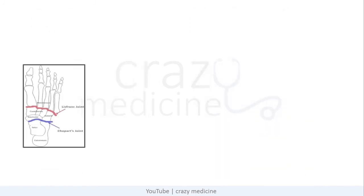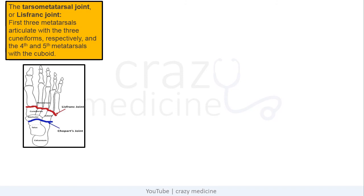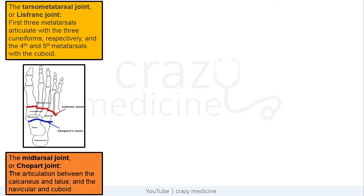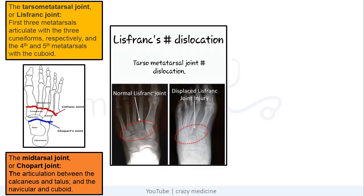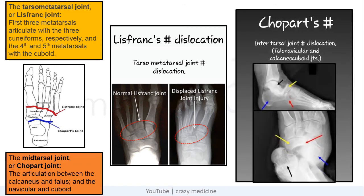The next important concept is Lisfranc and Chopart joint. In the Lisfranc or tarsometatarsal joint, the first three metatarsals articulate with the three cuneiforms, and the fourth and fifth metatarsals articulate with the cuboid. The Chopart joint, also known as the mid-tarsal joint, is the articulation between the calcaneus and talus, and navicular and cuboid. Lisfranc's fracture-dislocation is tarsometatarsal joint fracture-dislocation, and Chopart's fracture means intertarsal joint fracture-dislocation, involving the talonavicular and calcaneocuboid joints.